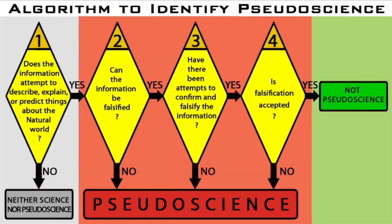Attempting to falsify or disprove the information covers the criterion of falsification. Moreover, attempts to confirm and falsify the information can be performed by parties other than the original source of the information, and this covers the criterion of repeatability.